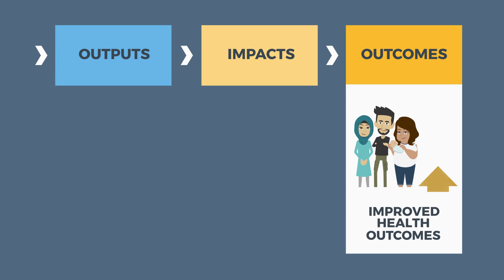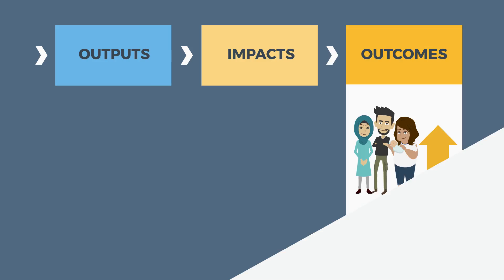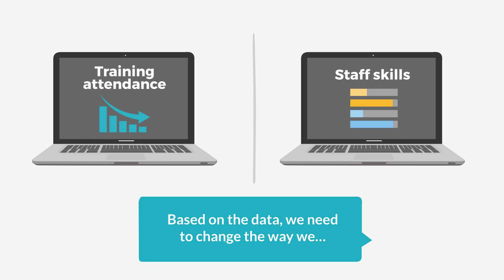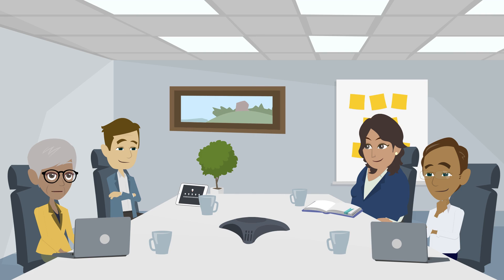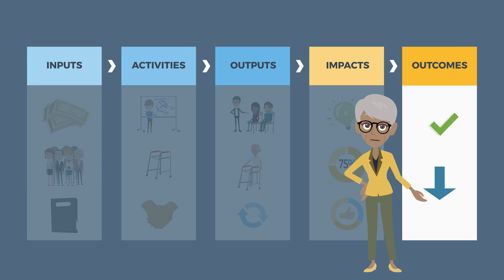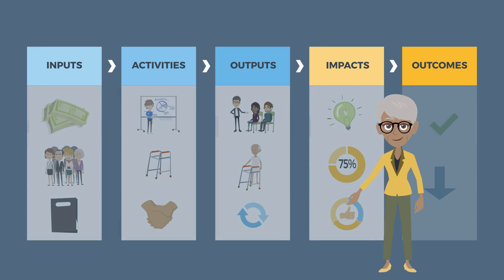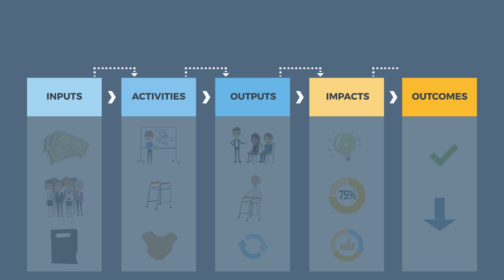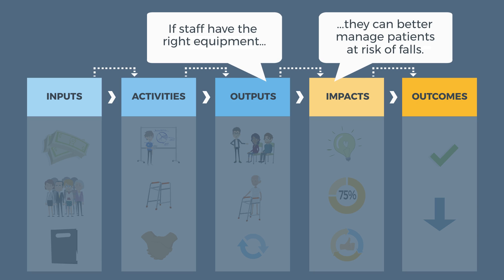Developing a program logic model can help ensure that what we do creates the change we want to see. It helps guide our evaluations so they inform program decisions. A program logic model is also useful for engaging stakeholders in the design or evaluation of a program, and communicating the intent of a program and its rationale.